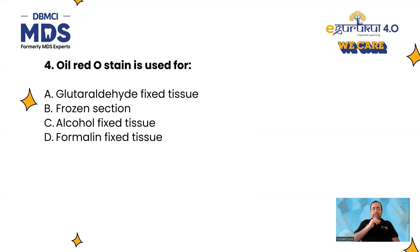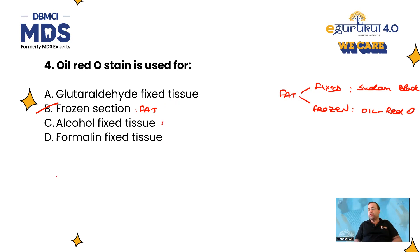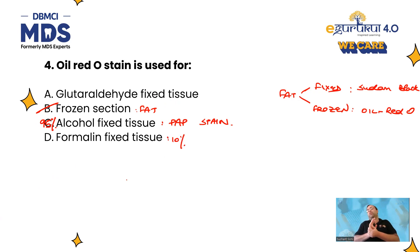A staining-based question. Oil-red O is a stain for fat — specifically for frozen sections. We can divide fat staining into two: for fixed fat, the stain used is Sudan black; for frozen sections, the stain is oil-red O. Fixed means glutaraldehyde-fixed. Next: alcohol-fixed tissue uses Pap stain — 95% alcohol is used. Most commonly used fixative is 10% formalin for light microscopy, versus glutaraldehyde which is used for electron microscopy.